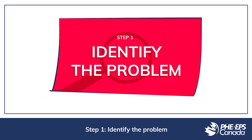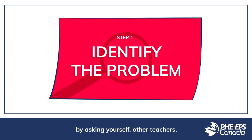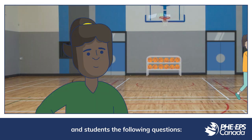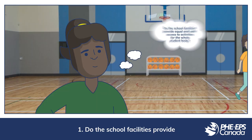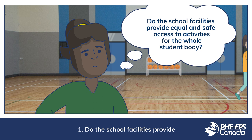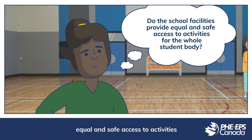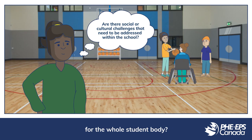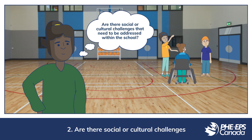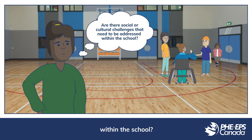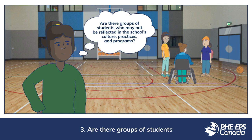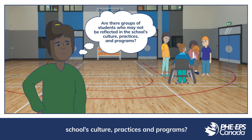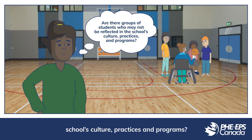Step 1: Identify the problem by asking yourself, other teachers, and students the following questions. Do the school facilities provide equal and safe access to activities for the whole student body? Are there social or cultural challenges that need to be addressed within the school? Are there groups of students who may not be reflected in the school's culture, practices, and programs?